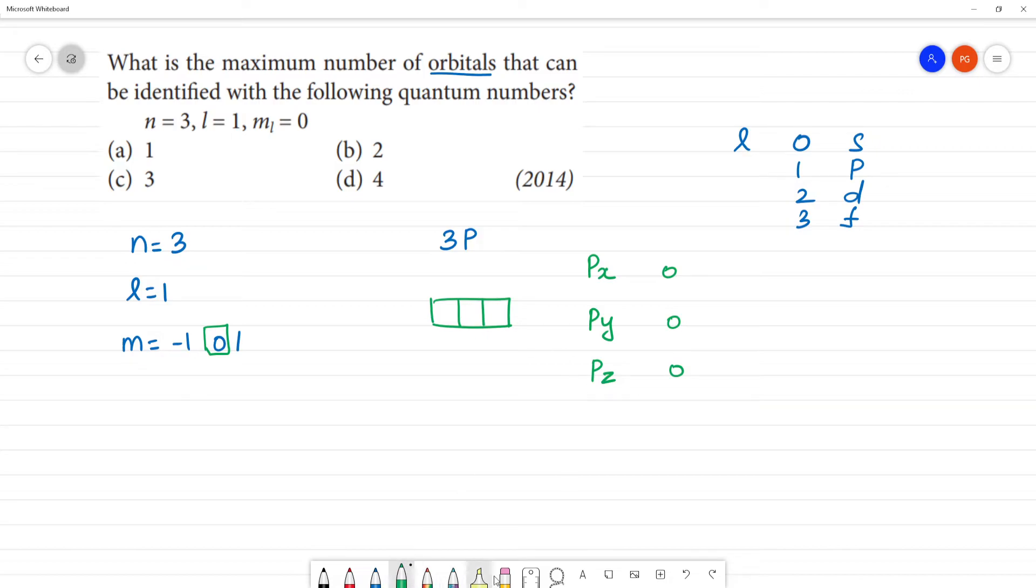So we have minus 1 value. So this has minus 1 value, this has 0, this has plus 1 value. How many orbitals have 0 value? One orbital has 0 value.